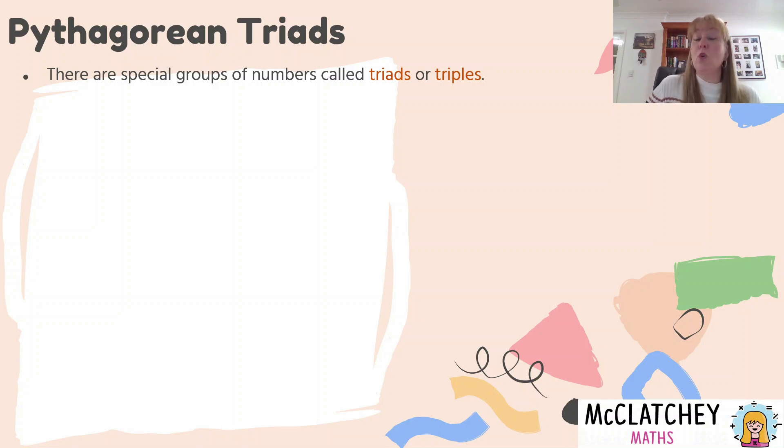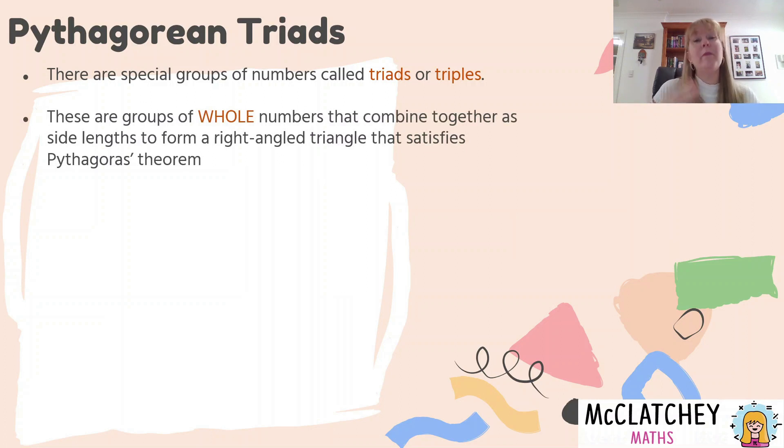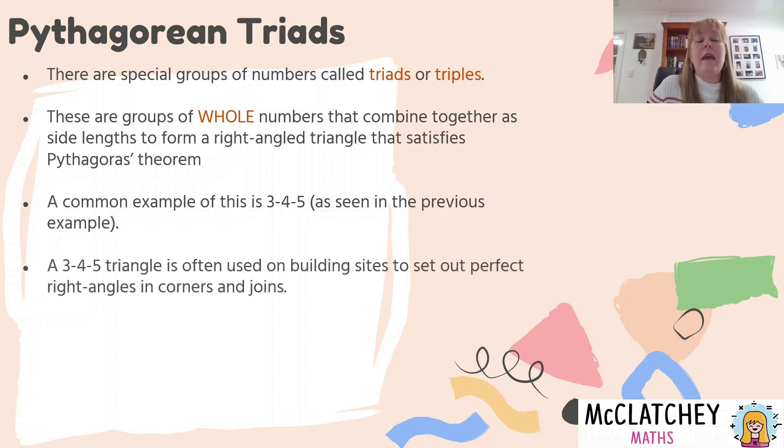Okay, we're going to have a very quick aside here and talk about something called Pythagorean triads. And these are special groups of numbers called triads or triples. Now what they are are groups of whole numbers. So they're basically a group of three numbers because a triangle has three sides. And these are three whole numbers that when they are put into a right angle triangle, they will satisfy the formula perfectly. Okay, and so there are groups of these numbers. And if you know the basic ones, you can work out what the other ones are. So a common example of this is called a three, four, five, we actually saw that on worked example two, with that particular triangle that we use. We found the unknown side and it was our side square root of nine being three centimeters.